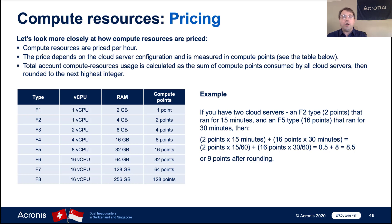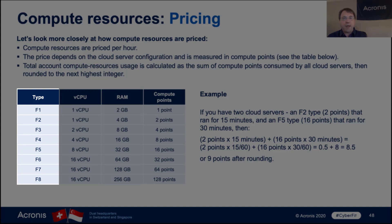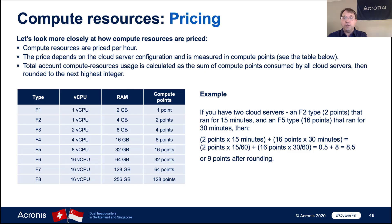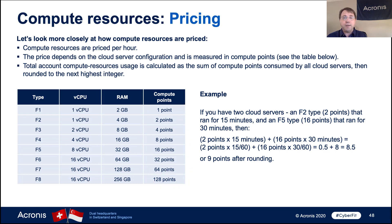Compute resources are a combination of the number of CPUs, the amount of RAM, multiplied by the number of hours that they're using it. As you can see, we have a number of different size systems that are predefined here — F1 through F8 — and the amount of points used varies greatly depending on the size of the machine.